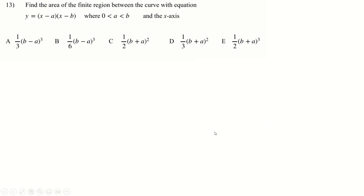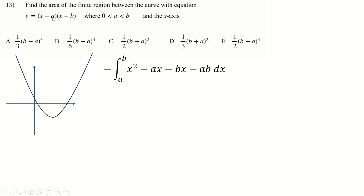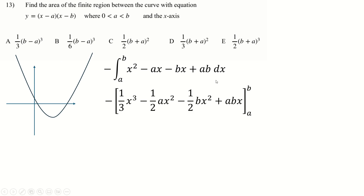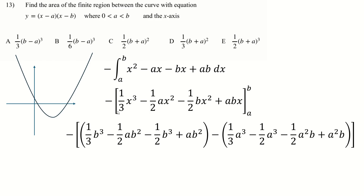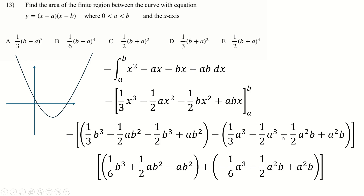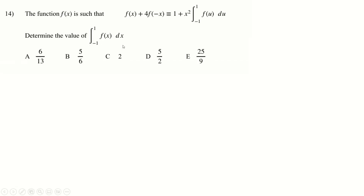Question thirteen — we've got a quadratic with roots A and B, both positive, and we want the area below the x-axis. We integrate between A and B with a negative sign in front to get a positive answer. I've expanded this out. We integrate with respect to x, throw B and A in. Tidying up: minus a sixth B-cubed, using the minus to flip signs, cancelling terms, and collecting. I can see a sixth B-cubed and minus a sixth A-cubed — the only answer that makes sense is this one, so I'll underline it and move on.